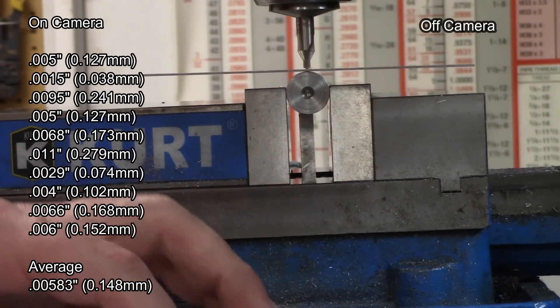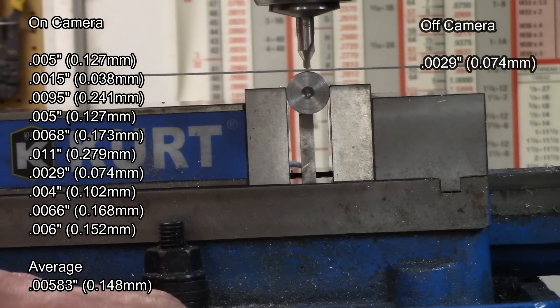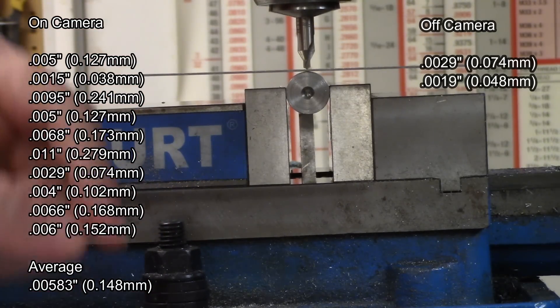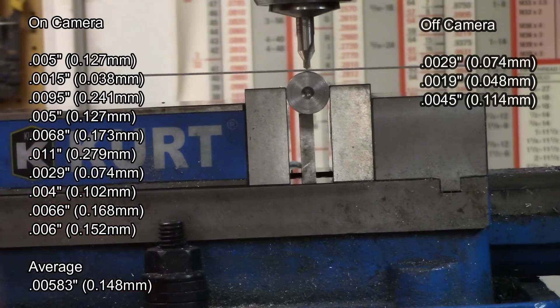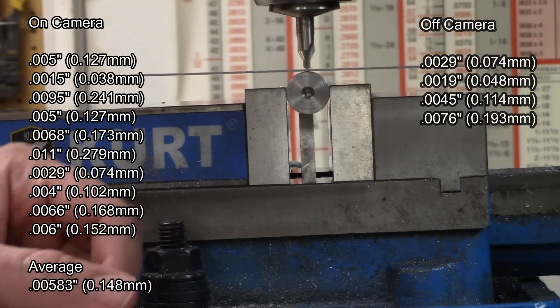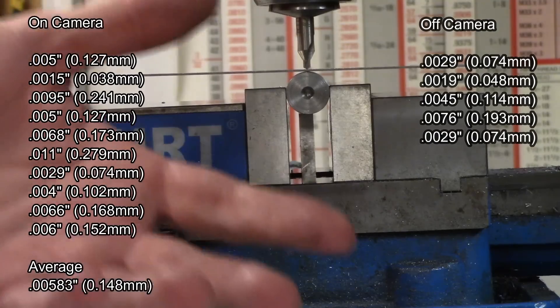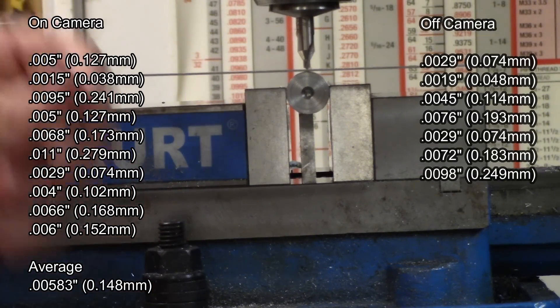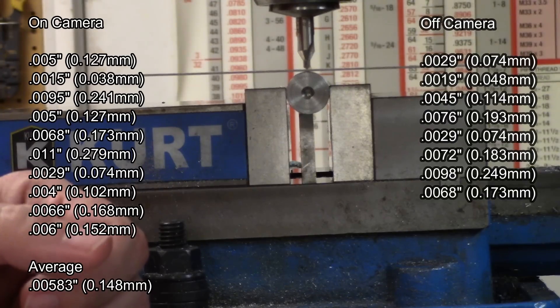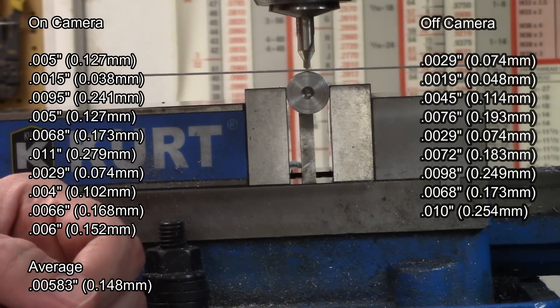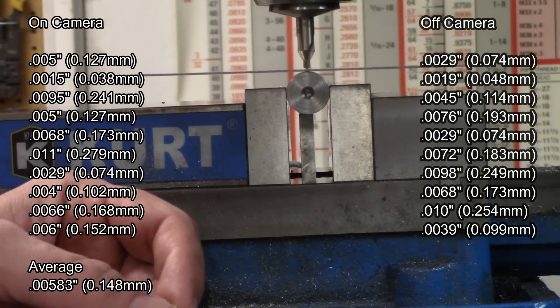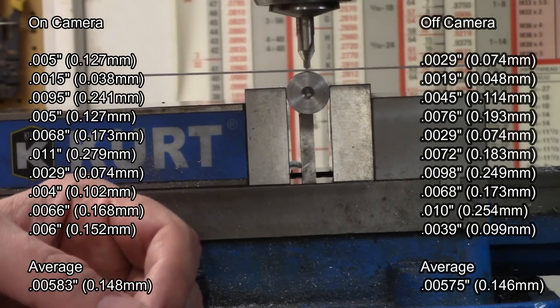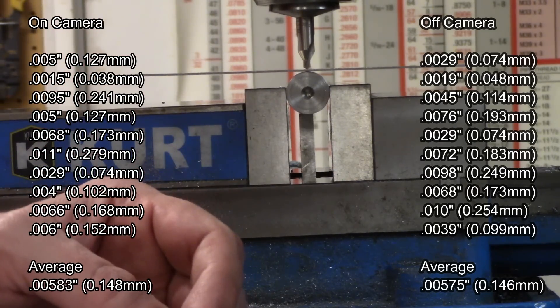For the off camera, I got .0029 for the first one, .0019 starting out real strong and then I got cocky. The next ones were .0045, .0076, .0029, not too bad. And then a really bad run, .0072, .0098, .0068, .010, and I finished strong with a .0039. The average for the off camera is .00575 as opposed to .00583. That's a pretty negligible difference, so I don't think having the camera in the way really affected my performance at all.